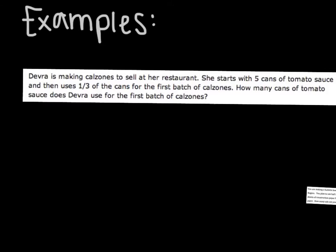Debra is making calzones to sell at her restaurant. She starts with five cans of tomato sauce and then uses a third of the cans for the first batch of calzones. How many cans of tomato sauce does Debra use for the first batch of calzones? There's the question right there, so I'm going to box that and put a variable with it. I'm going to pick the letter C because we're talking about how many cans.